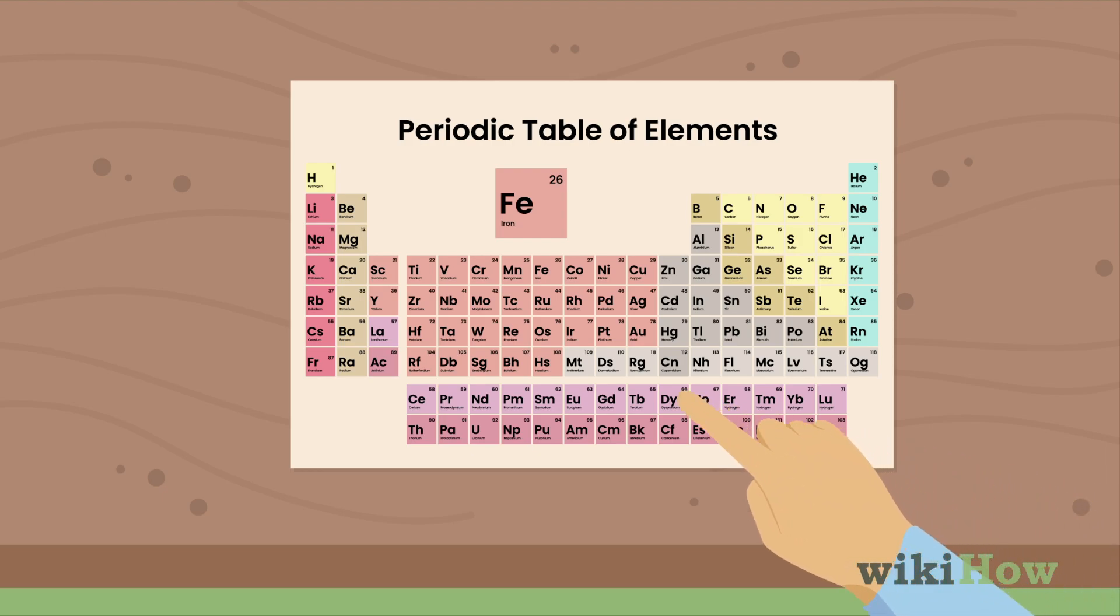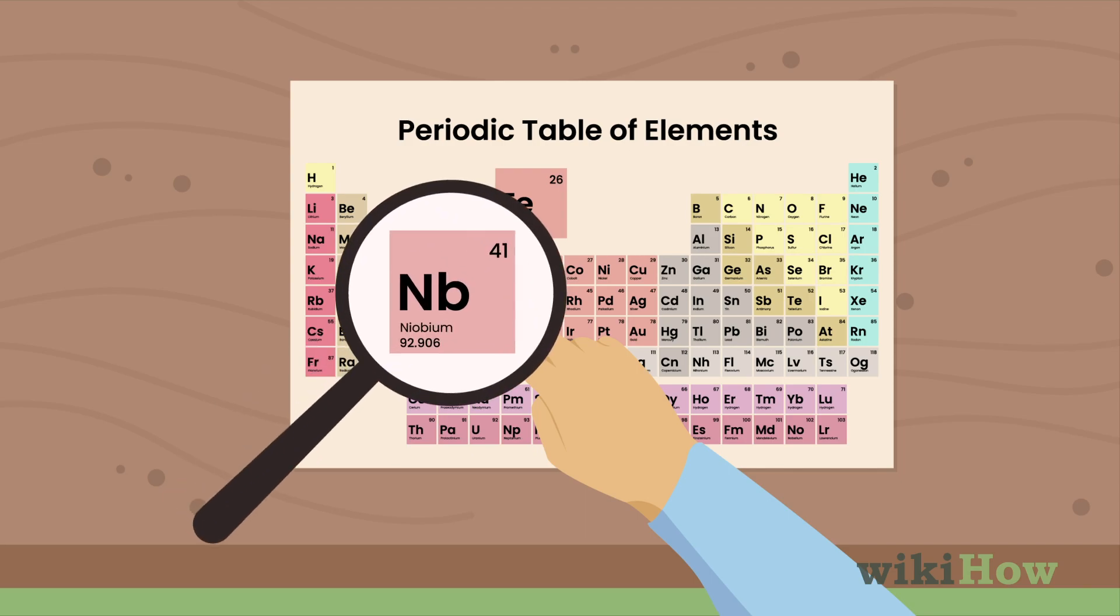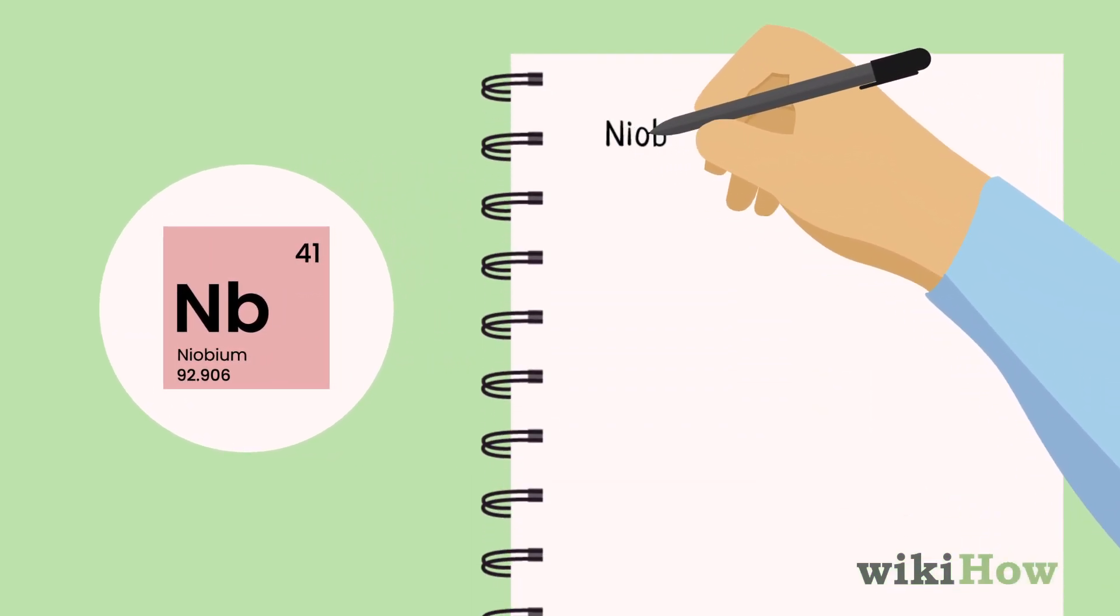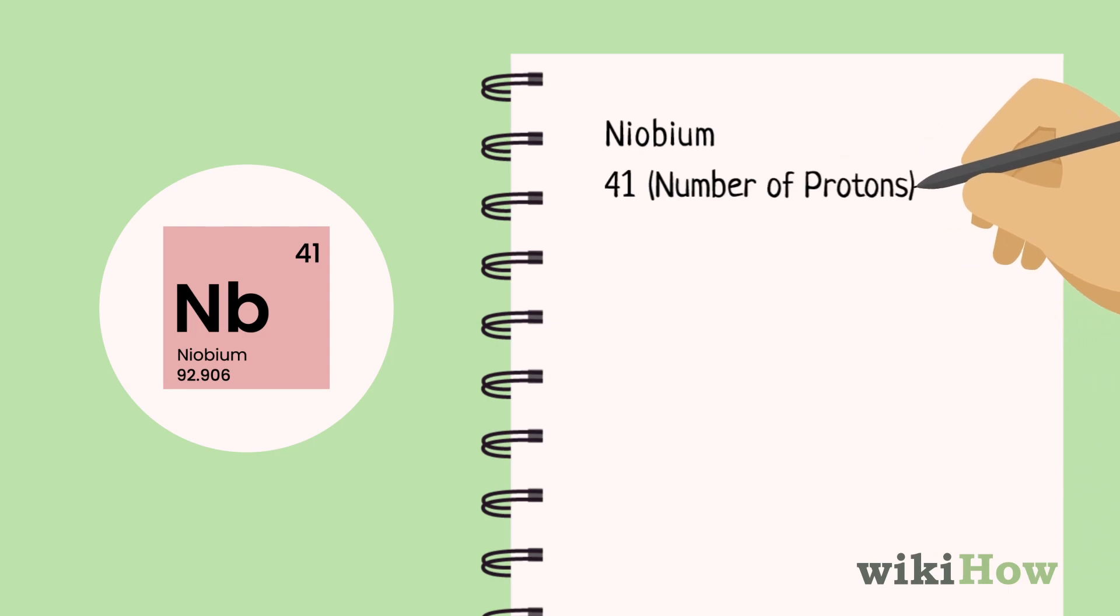First, locate the elemental symbol for your atom on the periodic table. Then, find the atomic number for the element. It's usually located somewhere above the element symbol.